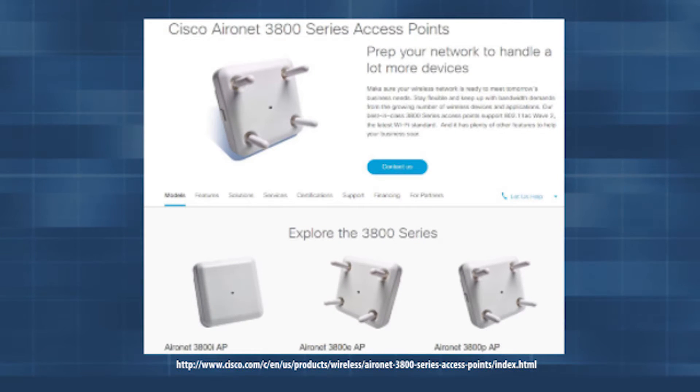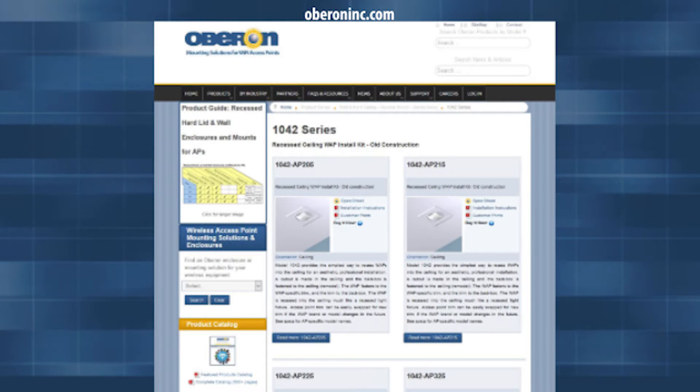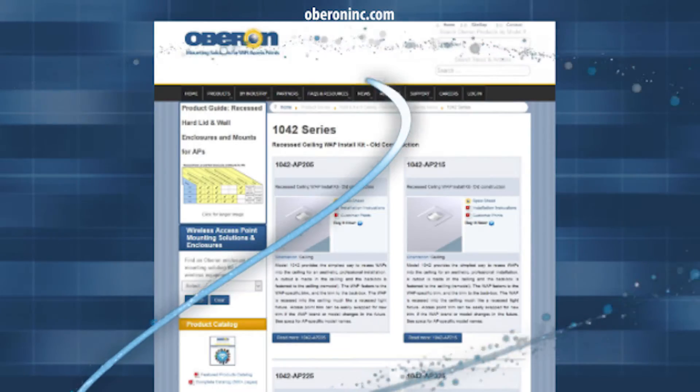This video demonstrates installation of the 1042 CCOAP 3800 for Cisco Aeronet 3800 series access points. See OberonInc.com for other 1042 models.